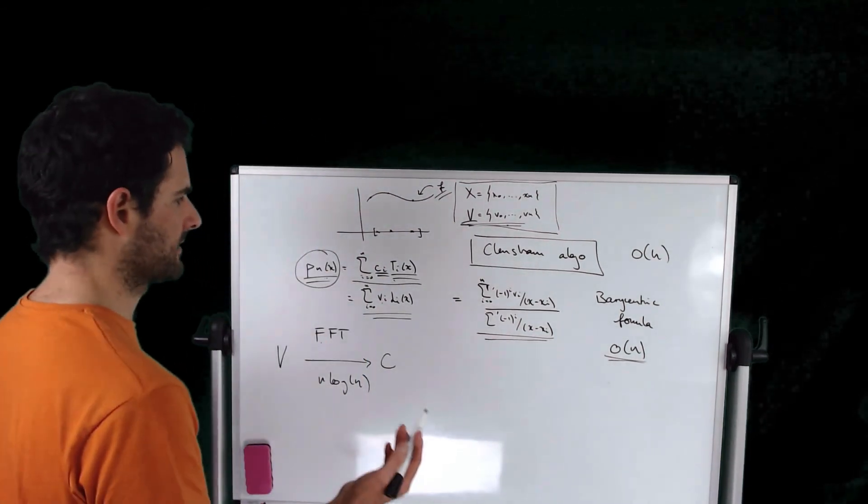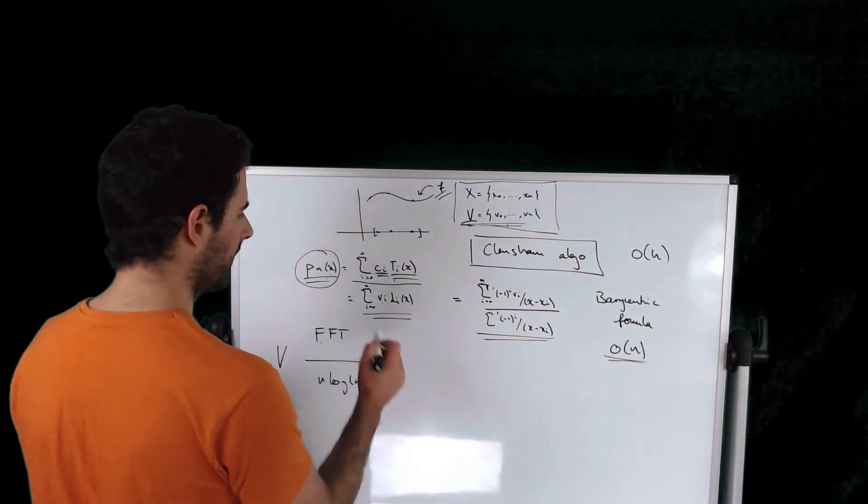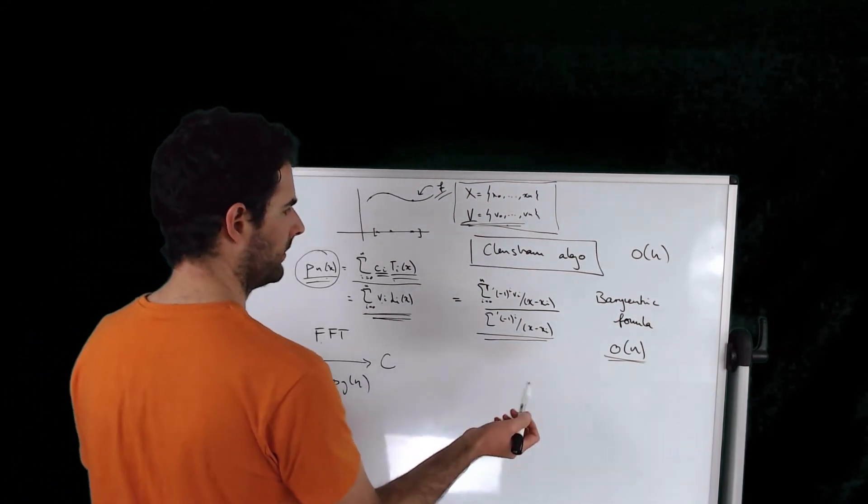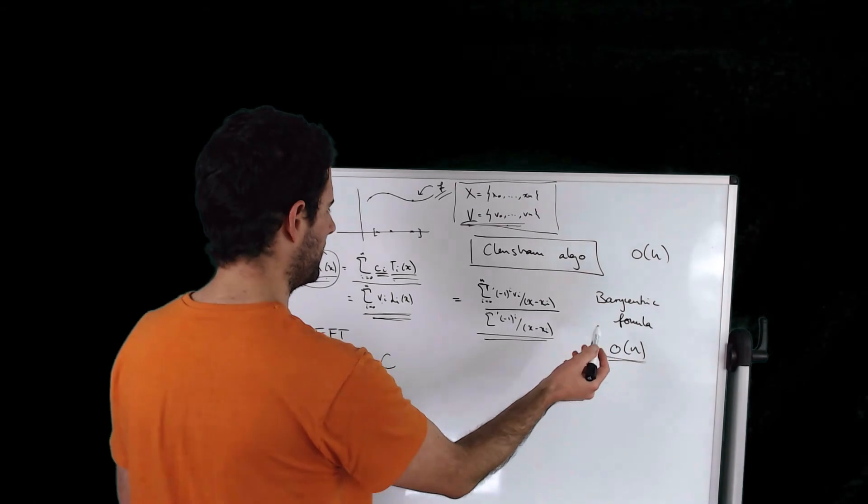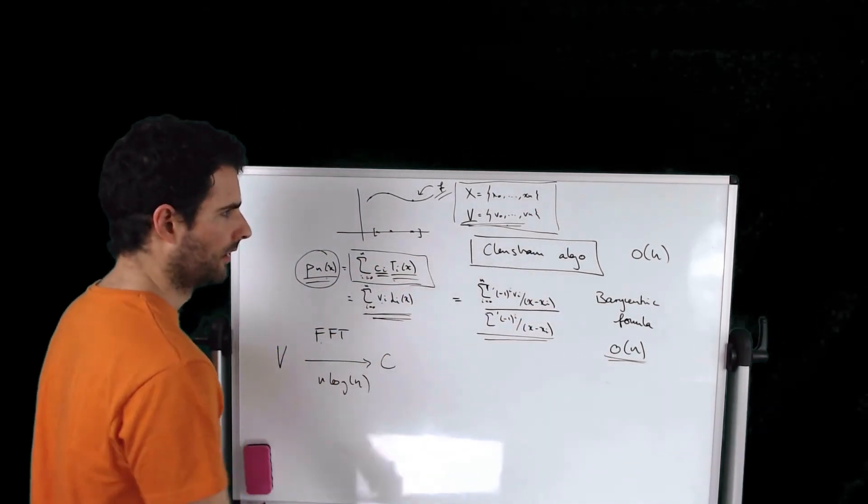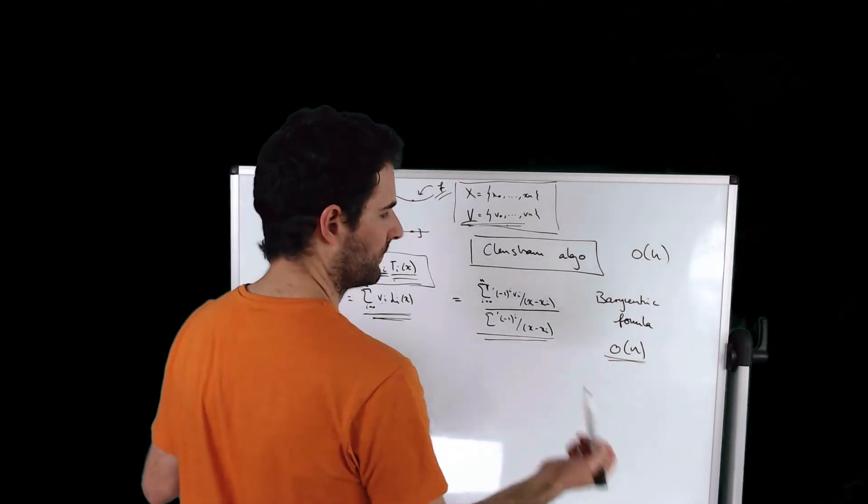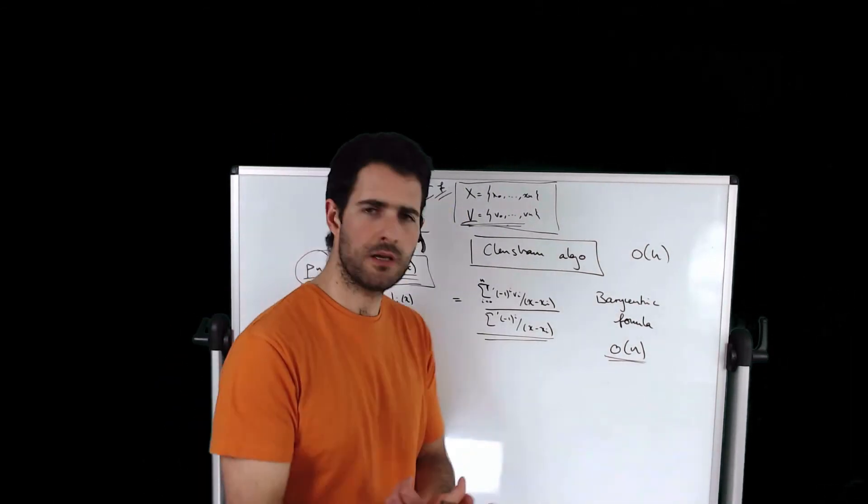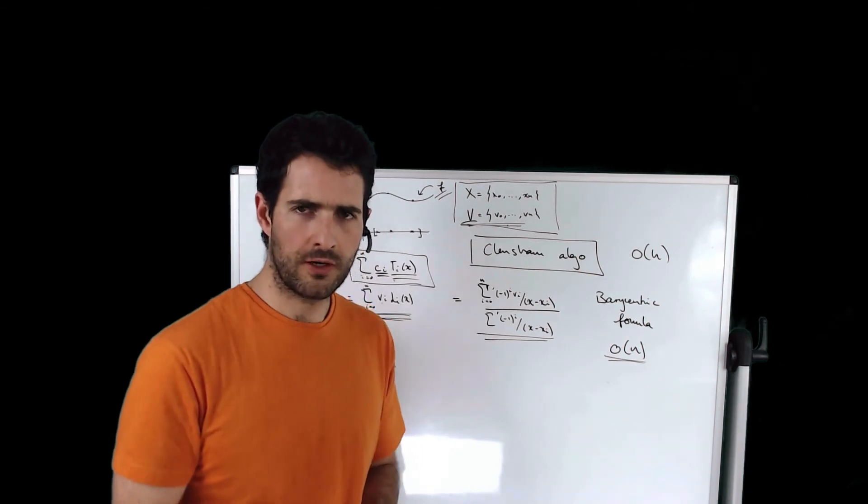So it doesn't really matter which expression you start off with. If you've got this expression, you can straight away use the barycentric interpolation formula. If you've got this other expression, you can use the Clenshaw algorithm. Both ways are optimal in terms of speed and stability.